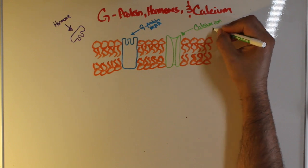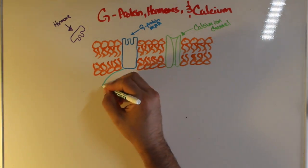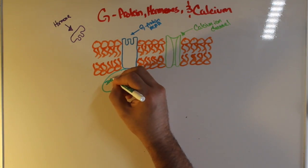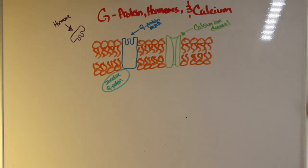Now before the hormone binds, on the intracellular side of the cell there is an inactive G protein. Now it's important to know that it's inactive because the hormone has not bound to the G protein receptor.